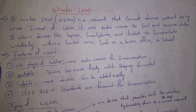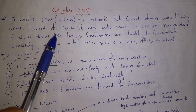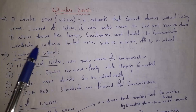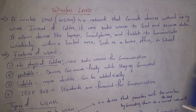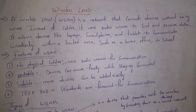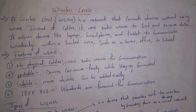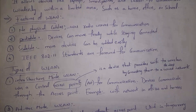A wireless LAN allows devices like laptops, smartphones, and tablets to communicate wirelessly within a limited area such as a home, office, or school. For example, in school all devices connect to a router's Wi-Fi network. In my house I connect my mobile, iPad, and laptop to home Wi-Fi — this is another example of a wireless LAN.